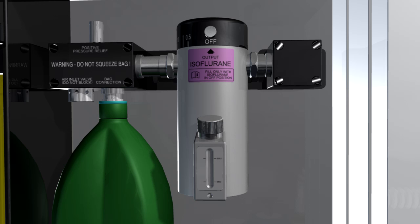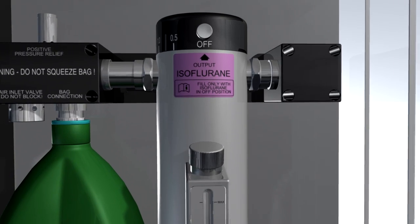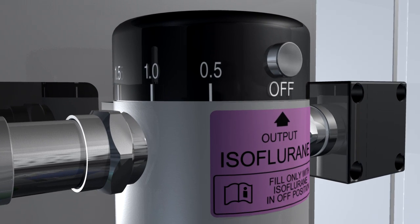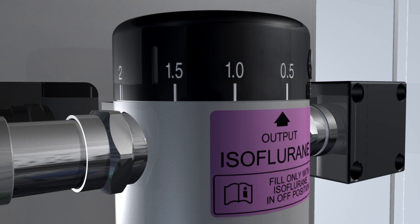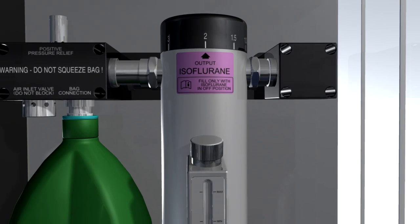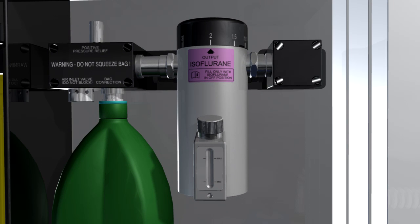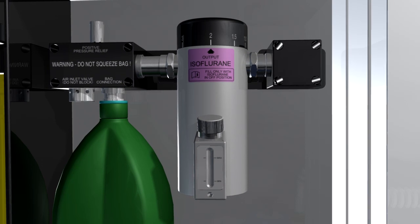The low resistance draw over vaporizer adds volatile agent to the carrier gas passing through it. Volatile agent is added by using the selector wheel to achieve the desired percentage. We now have anesthetic gas comprising oxygen, volatile agent and a variable amount of room air.